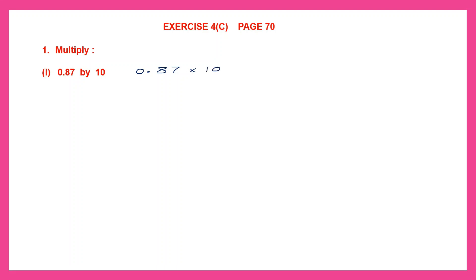0.87 into 10. Now look at 10 — it has only one zero. That means my point will move only one place to the right. So my answer here will be 8.7. The point has moved one place to the right. You don't have to do any long multiplication. Just move the decimal point to the right and count the number of zeros. Here there's only one zero, so the point moves one place and our answer is 8.7.